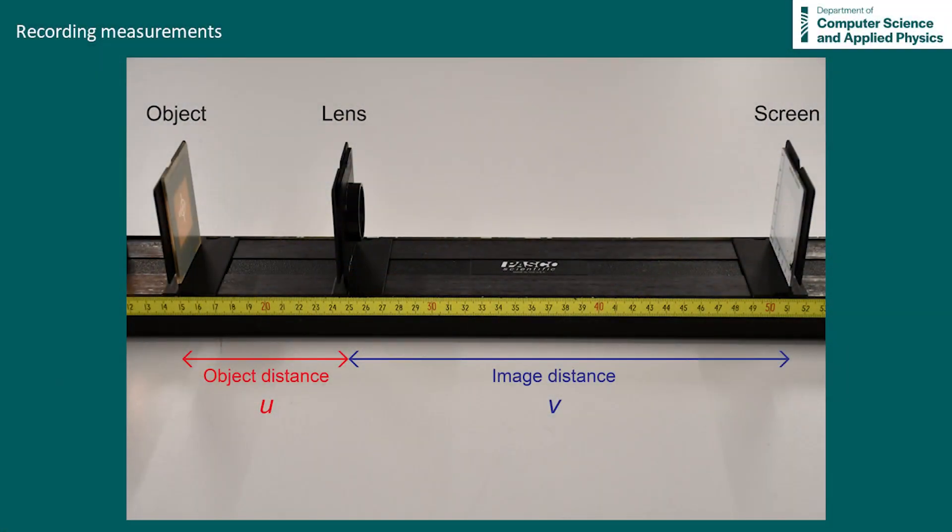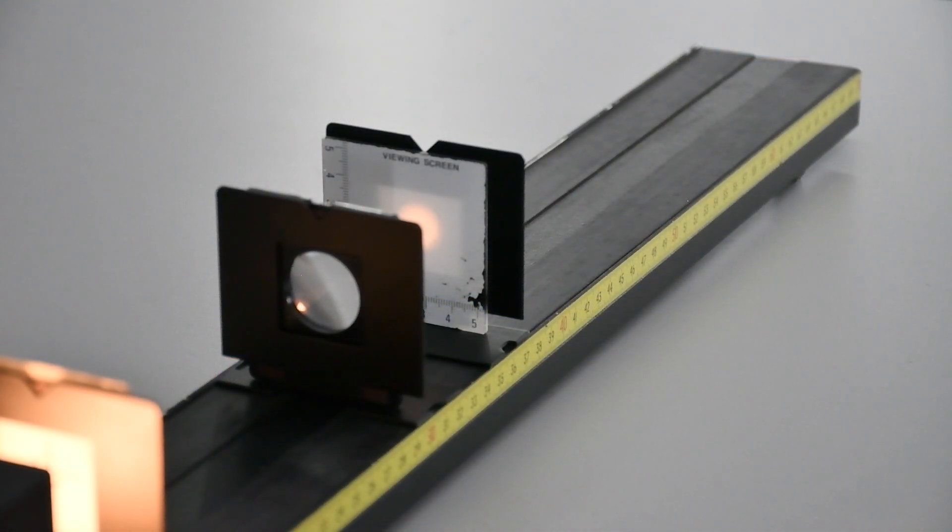We can now record values for the object distance U and the image distance V and solve for the value of the focal length. When making your measurements for U and V, when you are using a meter stick or a scale like in this experiment, make sure to avoid parallax error by taking your readings perpendicular to the scale.